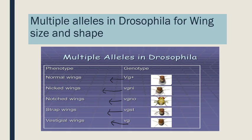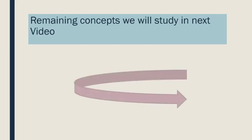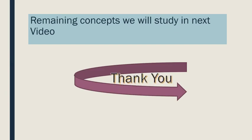Thus, this is multiple allelism, which is an example of intra-genic or inter-allelic interactions. So we studied three types: co-dominance, incomplete dominance, and today we spoke about multiple alleles. Remaining concepts we will study in the next video. Thank you.